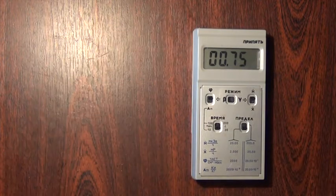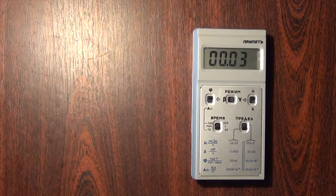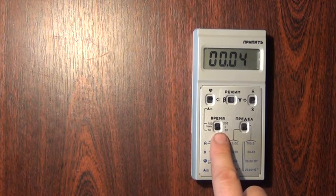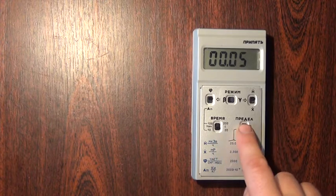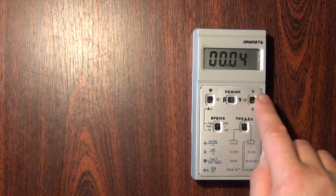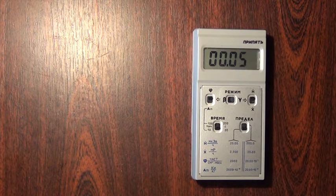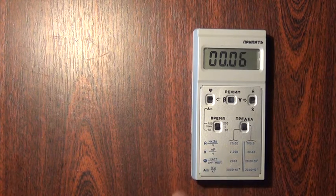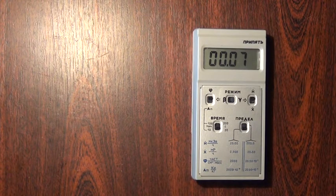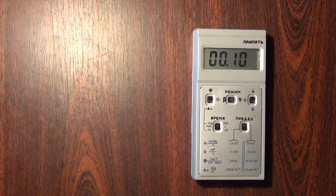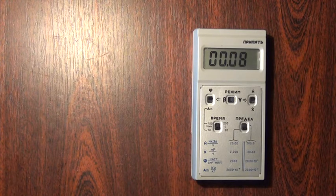Switch it on. We have time 20 seconds, limit 20 units of measure H with dot, it's micro zero per hour. In this place, the ground radiation is between 0.10 micro zero per hour.